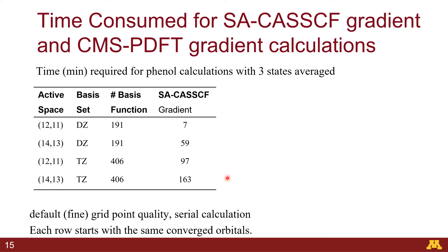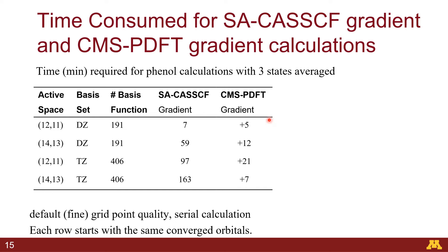This shows that our gradient implementation is accurate. I'd also like to show how efficient our method is. Here I'm showing the time consumed for gradient calculations with SA-CASSCF for different active spaces and basis sets, and also the additional amount of time needed to run CMS-PDFT gradients compared with SA-CASSCF gradients. The additional time required for the CMS-PDFT gradient calculation is only a small fraction of the SA-CASSCF gradient calculation time, meaning that if you can afford SA-CASSCF gradients, you can run CMS-PDFT to improve your accuracy at little extra cost.